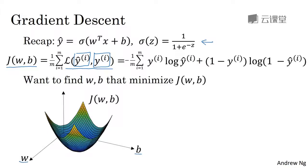the horizontal axis represents your space of parameters w and b. In practice, w can be much higher dimensional, but for the purposes of plotting, let's illustrate w as a single real number and b as a single real number. The cost function j of w, b is then some surface above these horizontal axis w and b. So the height of the surface represents the value of j comma b at a certain point. And what we want to do is really to find the value of w and b that corresponds to the minimum of the cost function j.